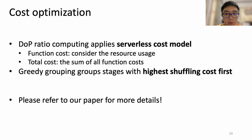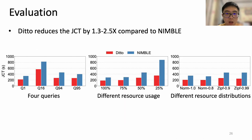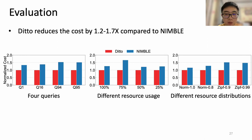Now we finish the part of optimizing JCT. For cost optimization, we apply the serverless cost model in our algorithms — please refer to our paper for more details. We build a system prototype of DETO on top of Sprite, a serverless framework enabling shared memory, implementing the time model in the execution time predictor and the algorithms in the elastic parallelism scheduler. We evaluate DETO across multiple TPC-DS queries and various settings. The results show that DETO outperforms Nimble by up to 2.5x on JCT and up to 1.7x on cost.